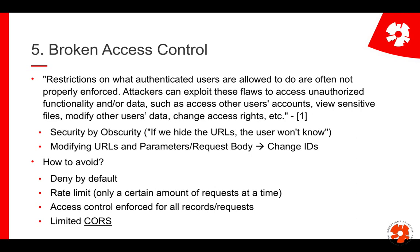Moving to number five: broken access control. This is different from broken authentication. Here we look at what people can do once they are authenticated — for example, every user can do the same thing. We check if someone is logged in, but we don't check whether that person is actually the right person. For instance, imagine I'm in Gmail, I log into my account, then just change the user ID and suddenly have access to someone else's emails. That would be broken access control — checking authentication but not authorization.